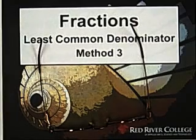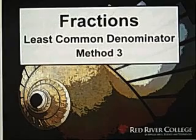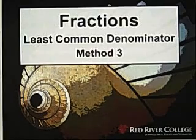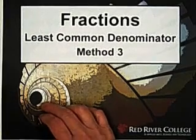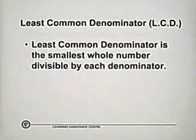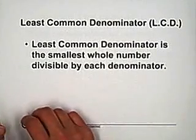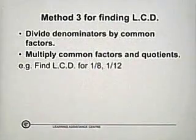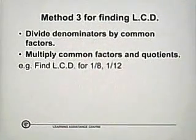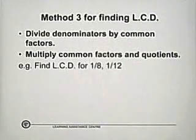Hi, Wiseguys in Session. This is Method 3 to find the least common denominator. The least common denominator is the smallest whole number divisible by each denominator. Method 3: first step, divide denominators by common factors. Second step, multiply common factors and quotients.